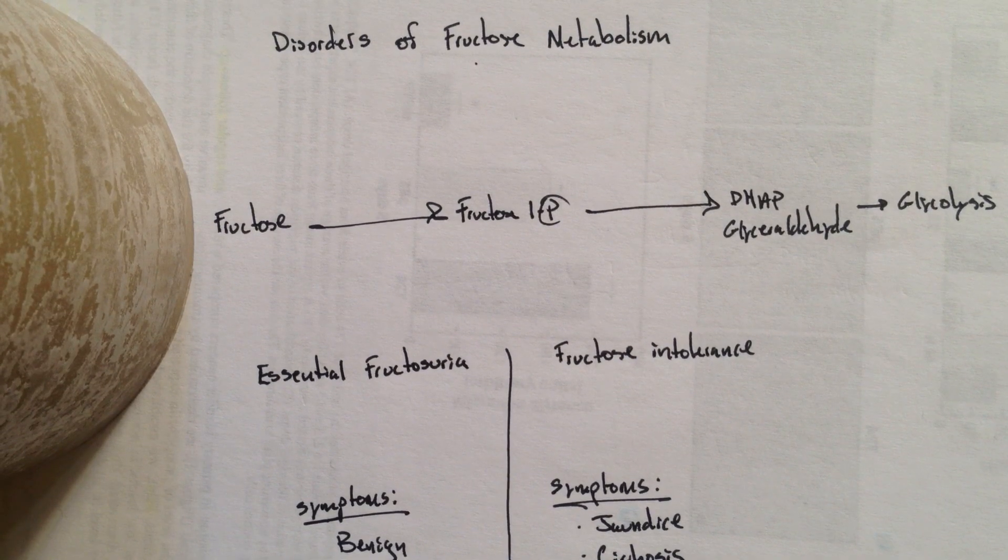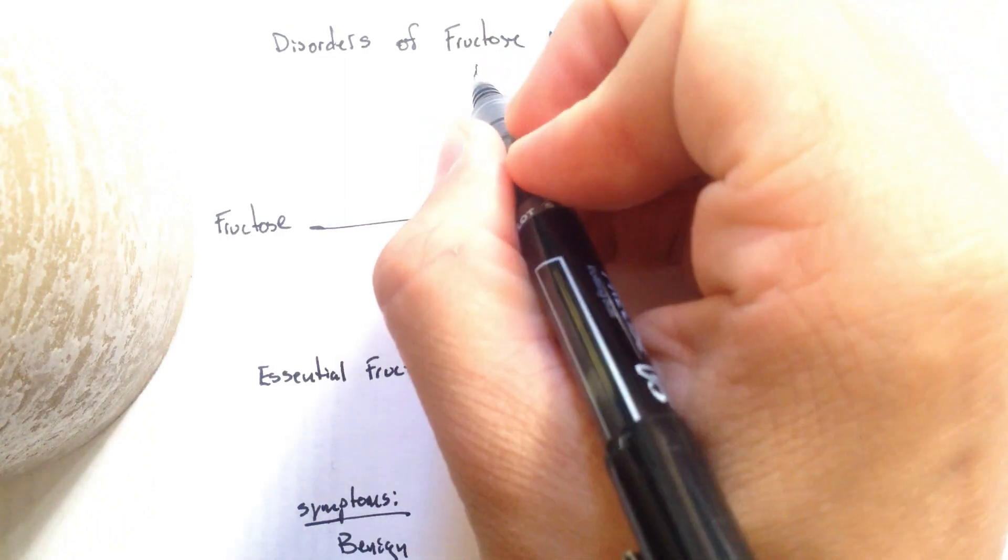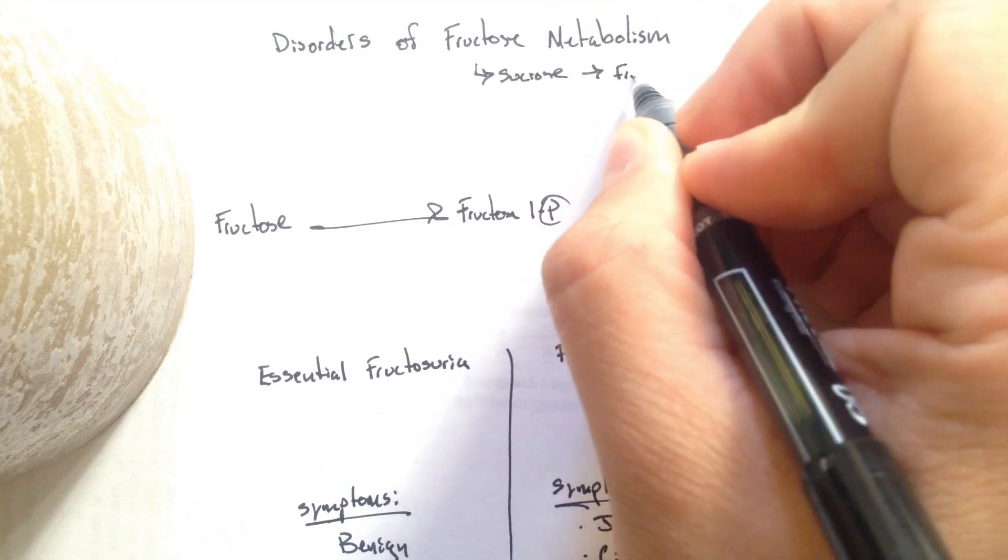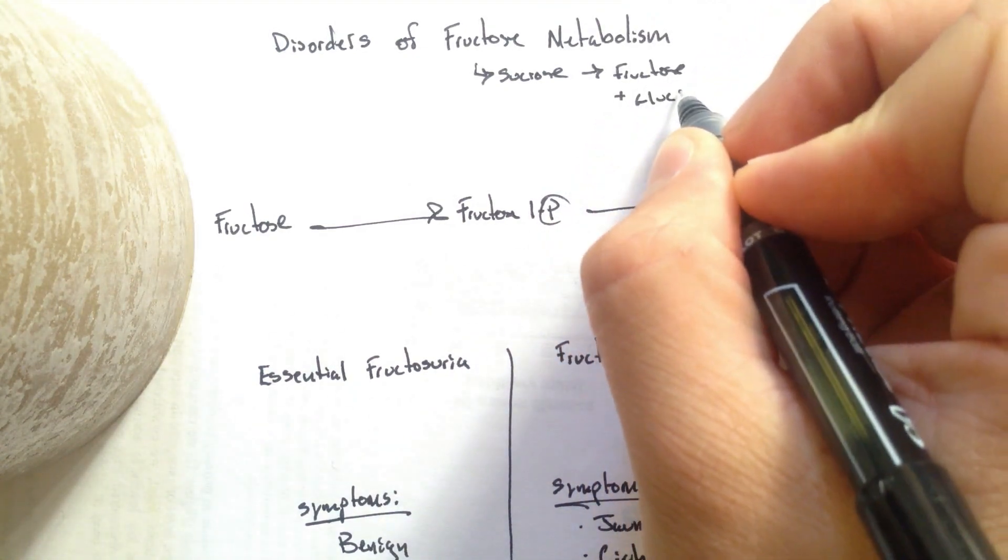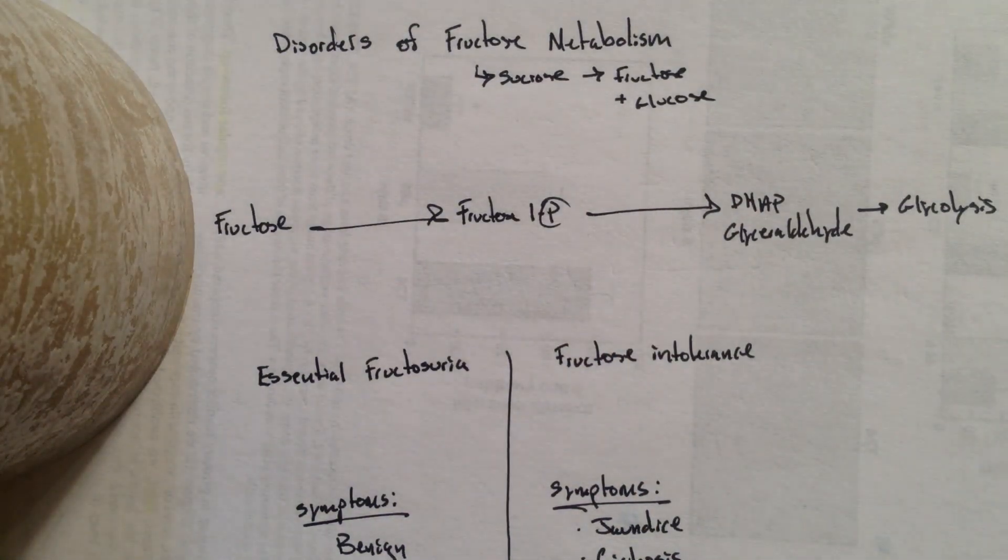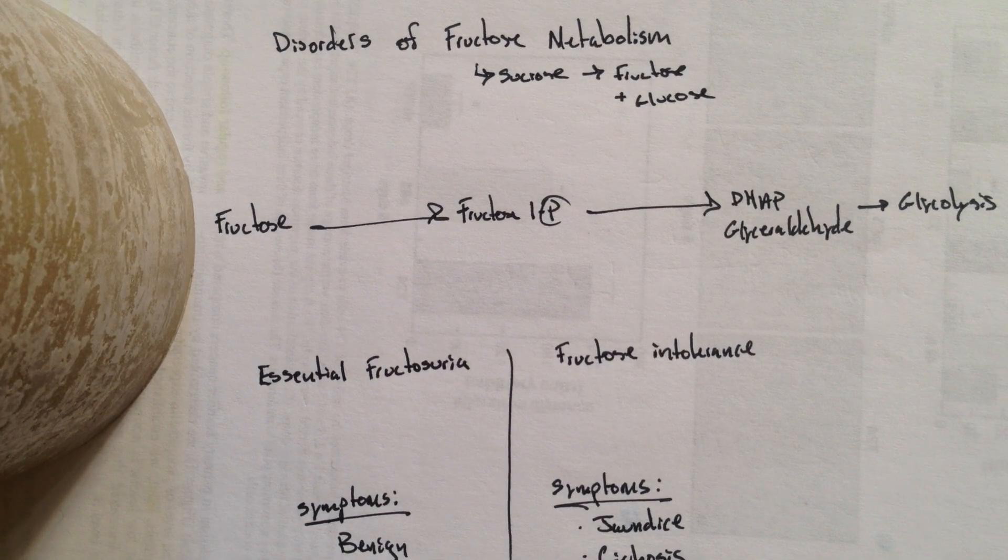So first, let's start with fructose. Where does fructose come from? Fructose comes from sucrose, which breaks down into fructose and glucose. So you can either get fructose from eating just the monomer fructose or from ingesting sucrose, which will break down into fructose and glucose.